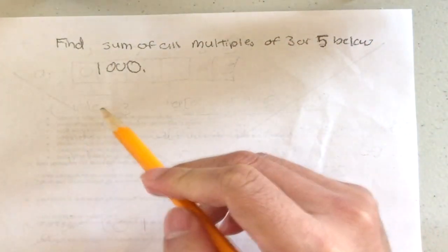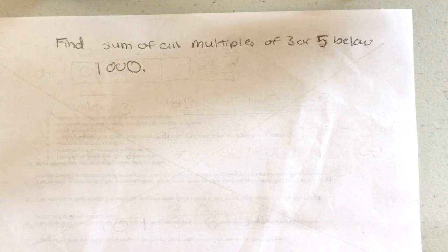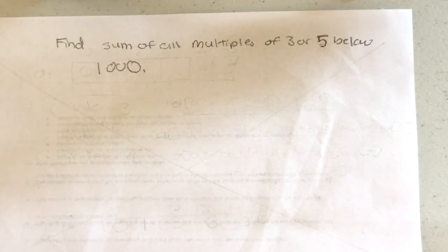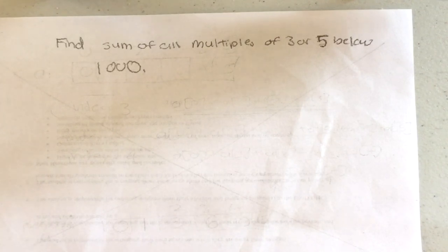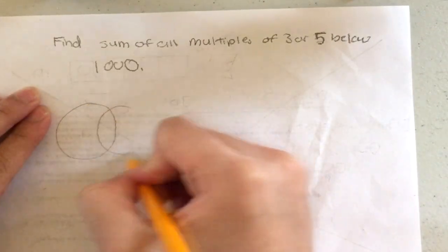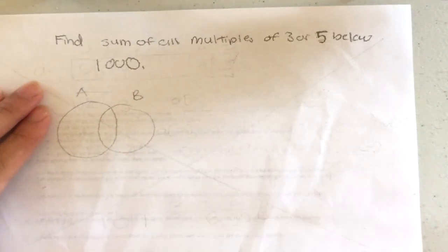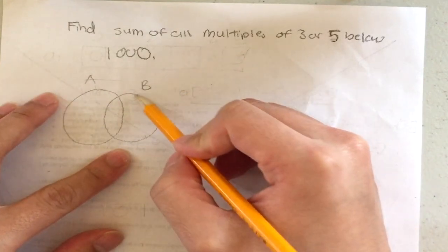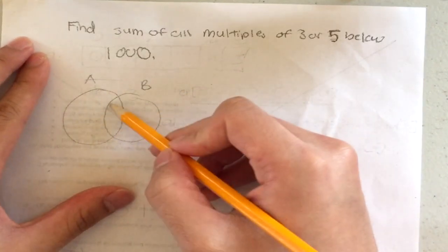Whenever I see a problem with 'or', I know I have to use the inclusion-exclusion principle. Let me explain what that is. Let's say I have a set A and a set B with some group of numbers in each, and the intersection between them is all the numbers that are in both A and B.